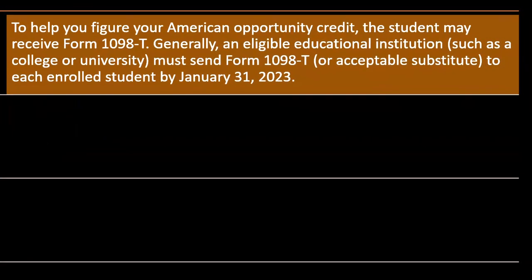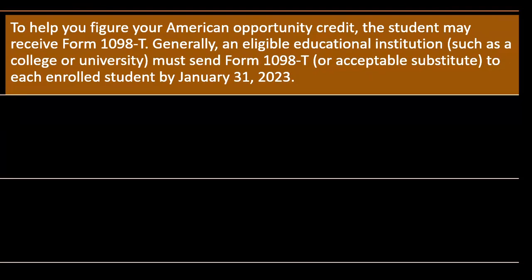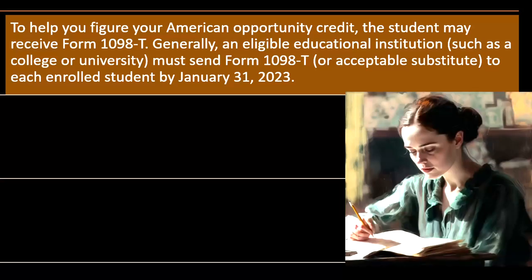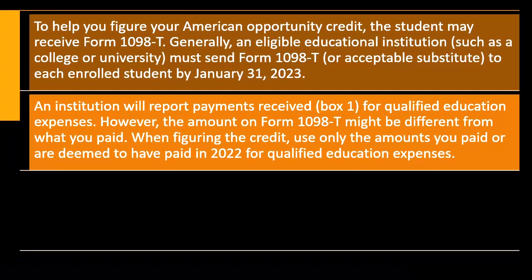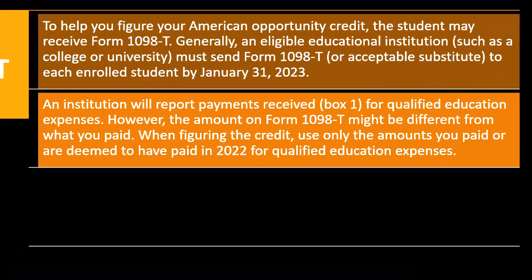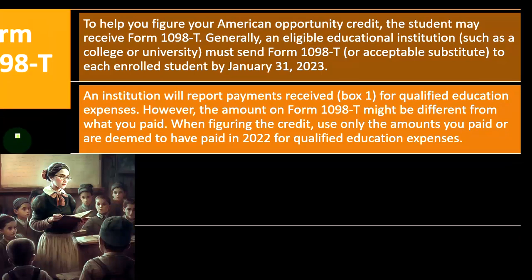Form 1098-T: To help figure your American Opportunity Credit, the student may receive Form 1098-T from the educational institution. Generally, an eligible educational institution such as a college or university must send Form 1098-T or an acceptable substitute to each enrolled student by January 31st, 2023. An institution will report payments received in Box 1 for qualified education expenses. However, the amount on Form 1098-T might be different from what you paid — when figuring the credit, use only the amounts you paid or are deemed to have paid in 2022 for qualified education expenses.